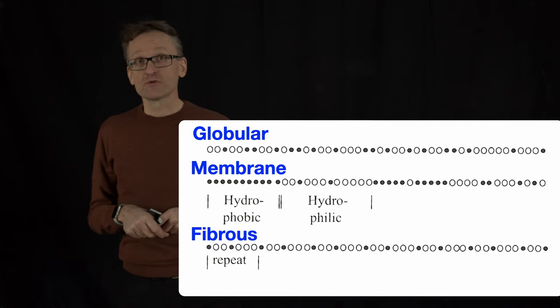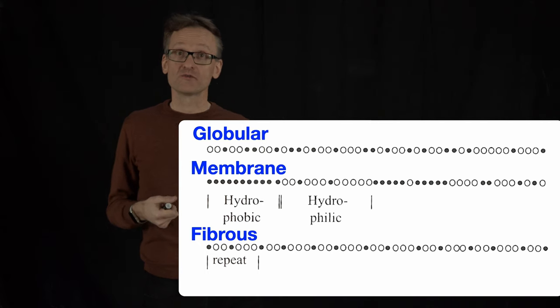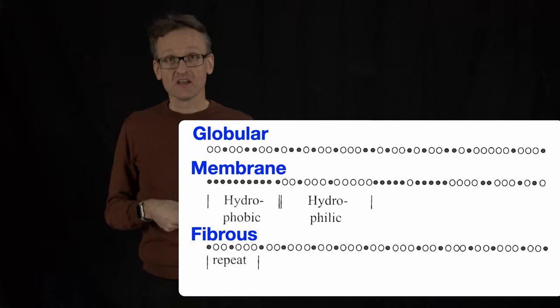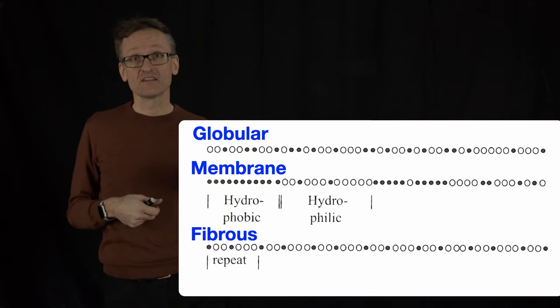In globular proteins, we could argue that this pattern is just do you prefer to be an alpha helix or not, or do you prefer to be a beta sheet or not? In membrane proteins, the obvious pattern is are you hydrophobic, that is in the membrane, or hydrophilic in the loops?